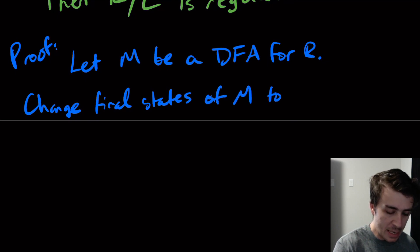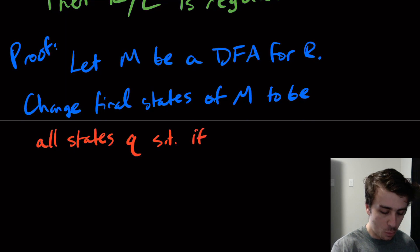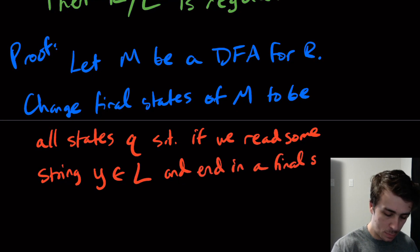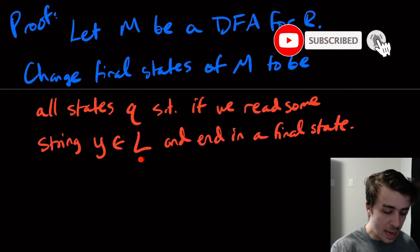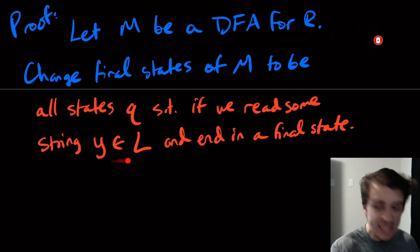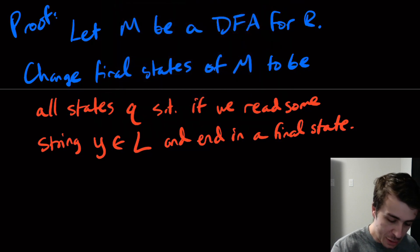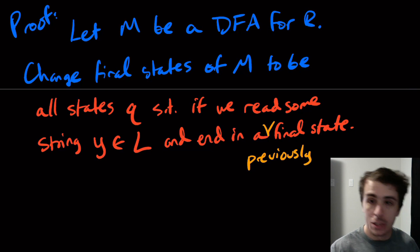Here's the important part. All states is going to be all states q in that machine M such that if we read some string y in that arbitrary language L and end in a final state. If I read any string at all from this language, if there exists a string Y such that from this state q we hit that state, we hit a final state, we're going to mark q as a final state. And I actually should mention here that this right here, I should say previously final state.